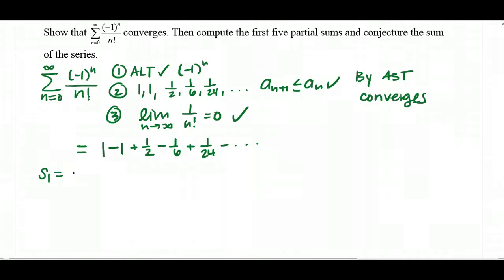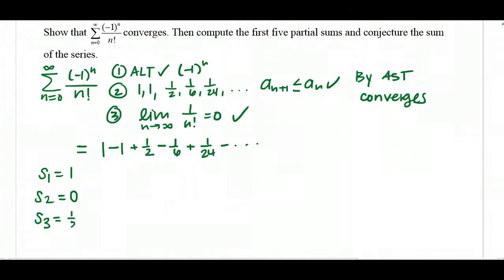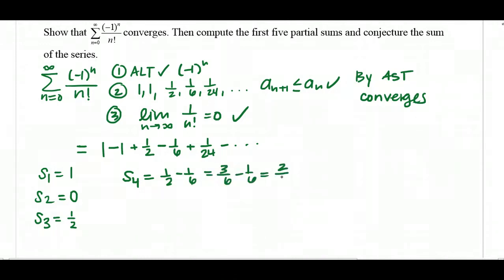S1 is just the first term in the series, so that's 1. S2 is adding up the first two terms: 1 plus negative 1, or 1 minus 1, gives 0. S3 is adding the first three terms: 0 plus 1 half gives 1 half. And then S4: I add 1 half plus negative 1 sixth. So 1 over 2 is 3 over 6 minus 1 over 6, which is 2 over 6, or 1 third.